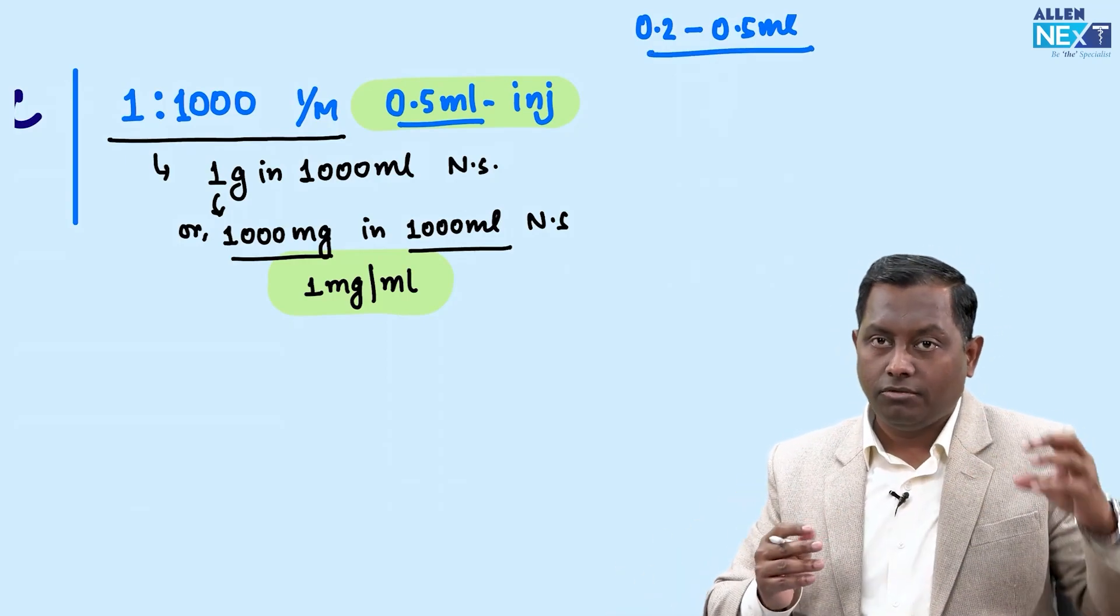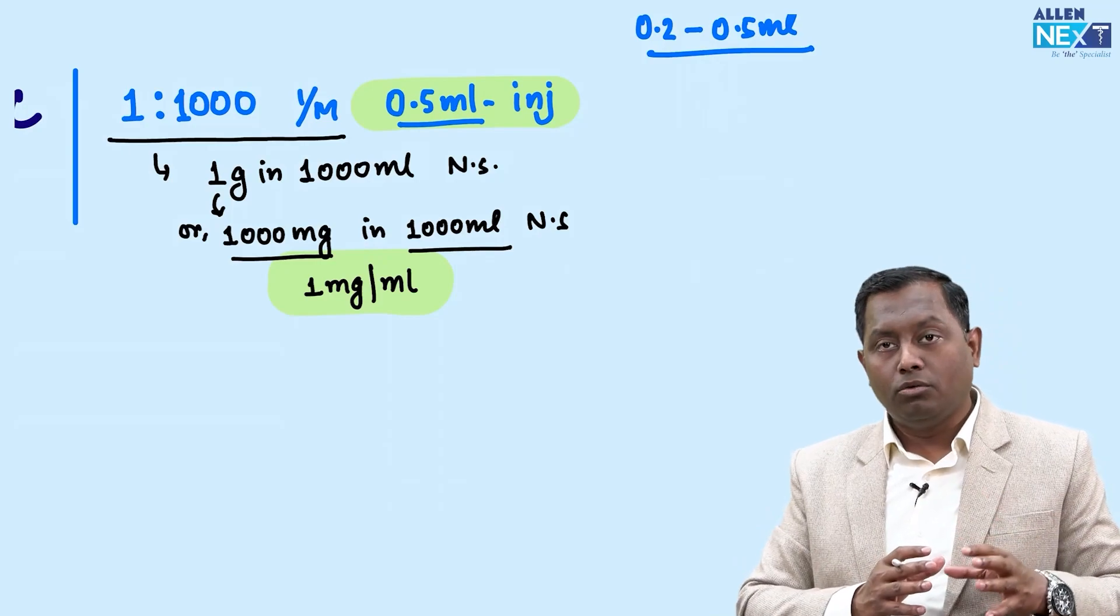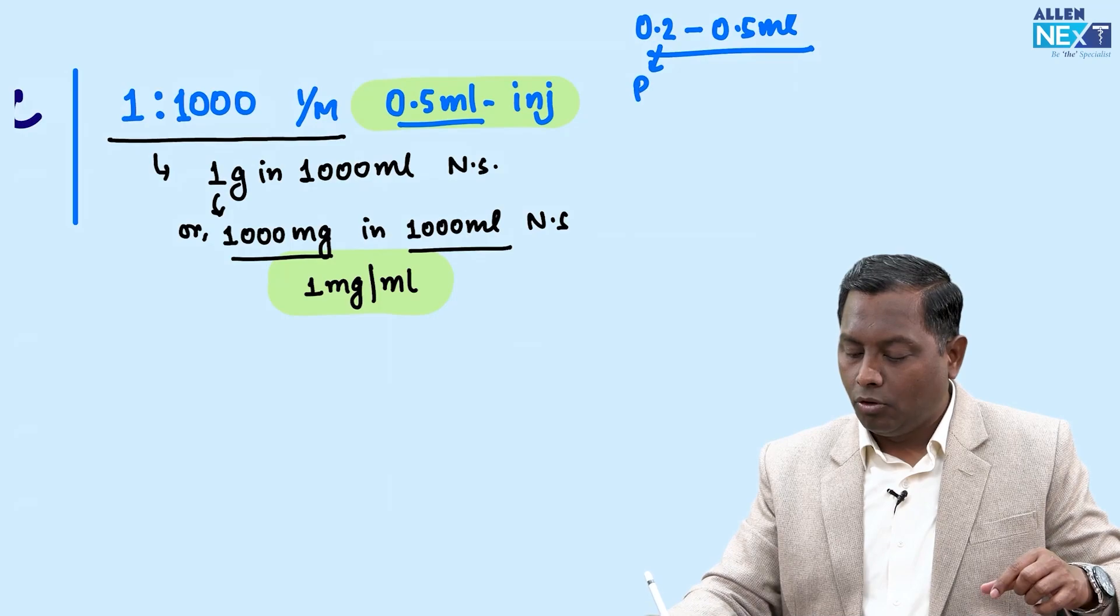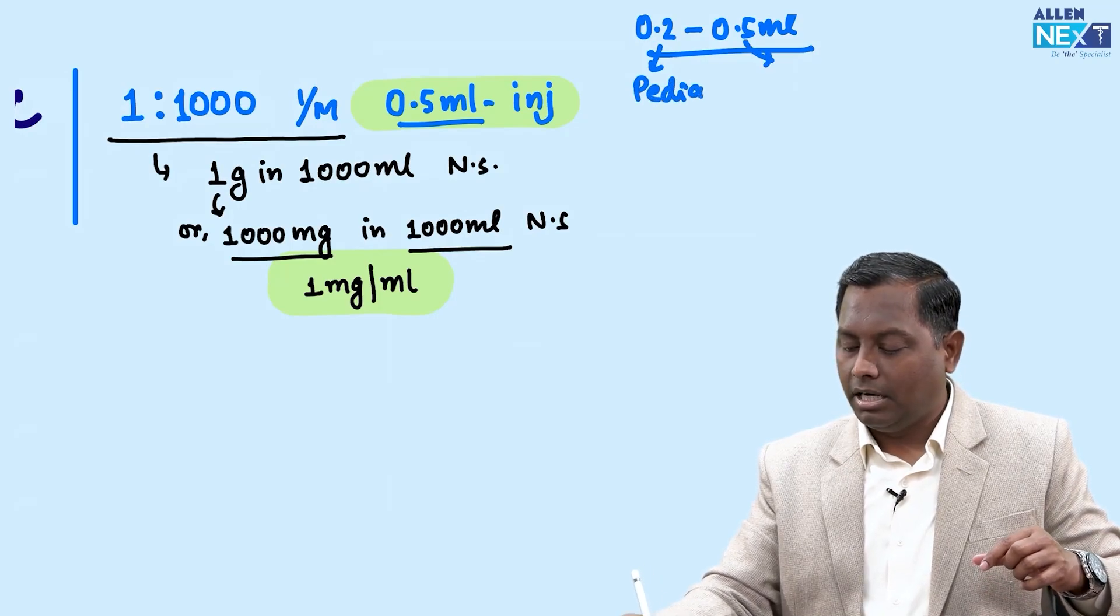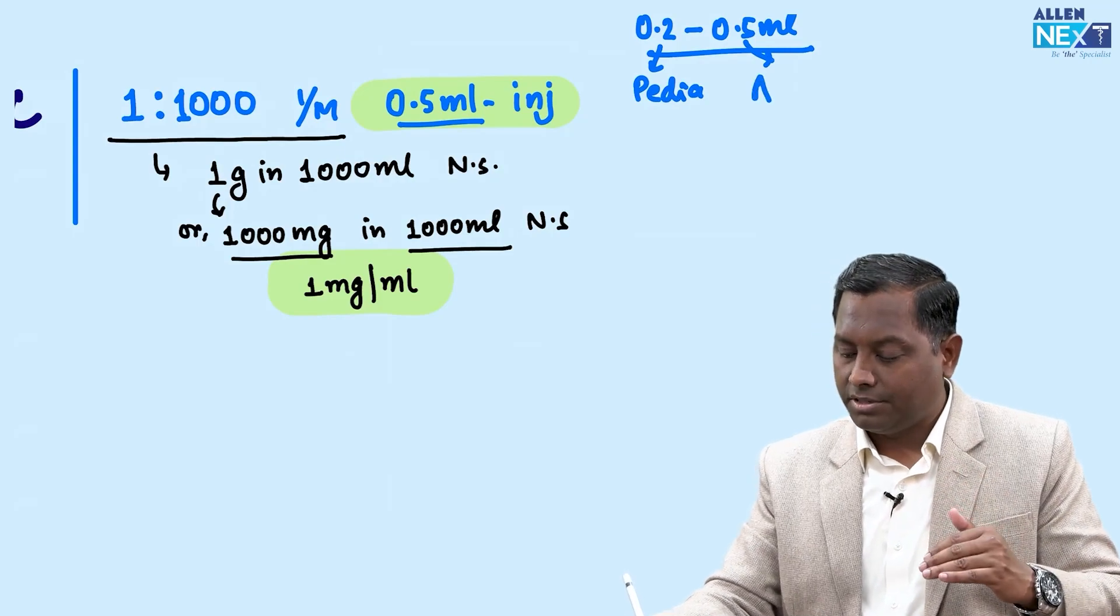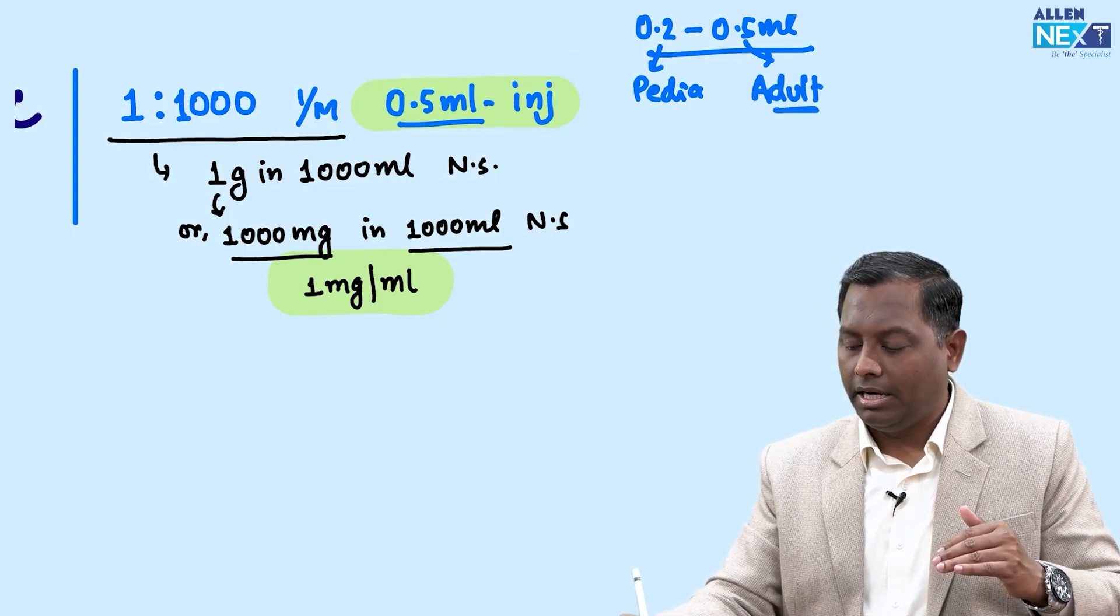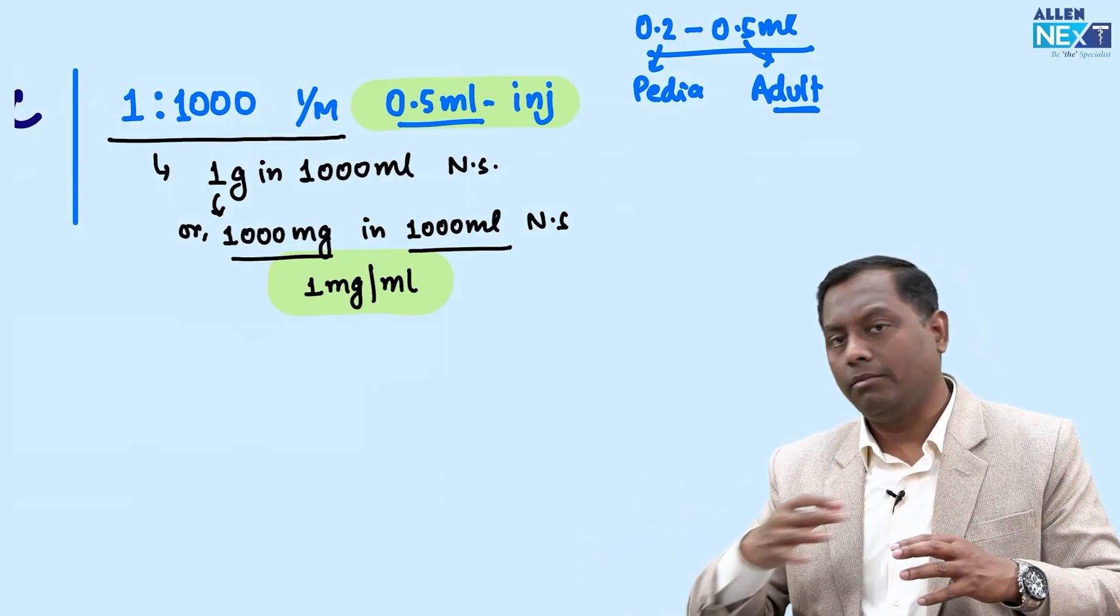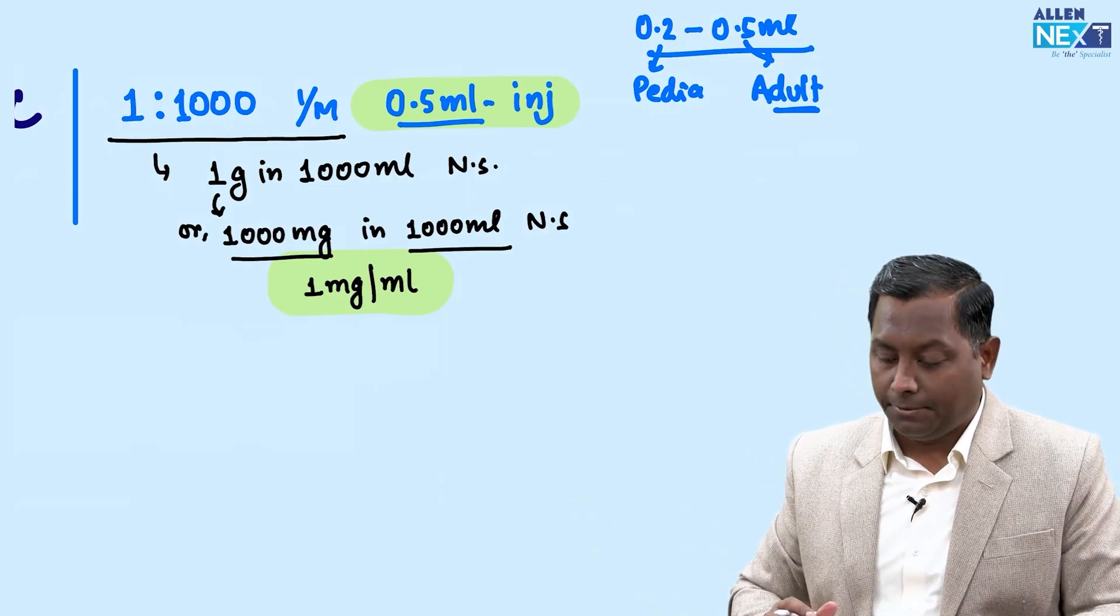In the pediatric population, we give on the lower side like 0.2 or 0.3ml. In adults, because we're not worried about toxicity but more about life-saving, we go with 0.4 to 0.5ml on the higher side, mainly adult side.